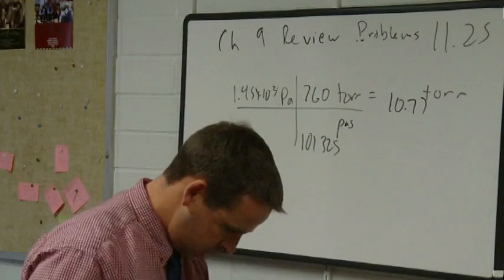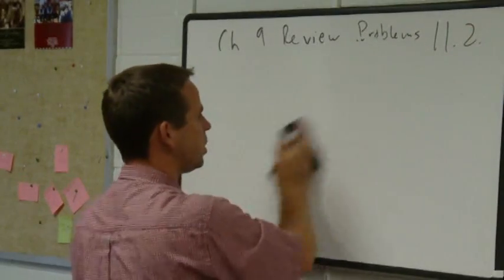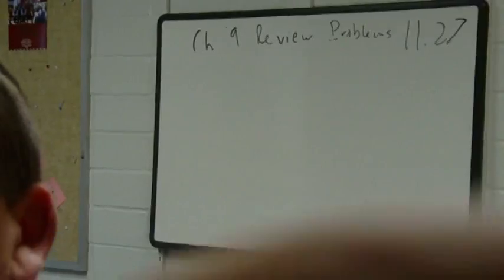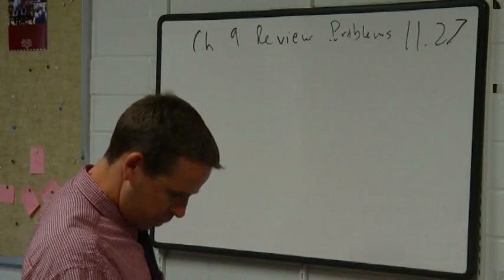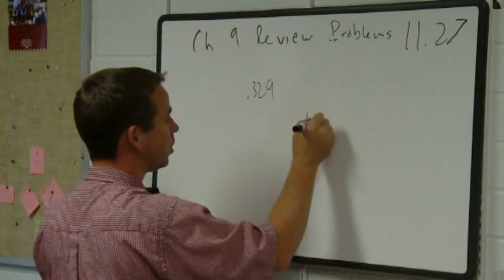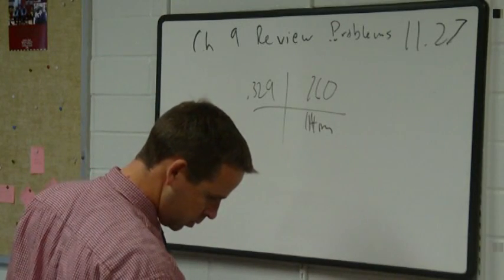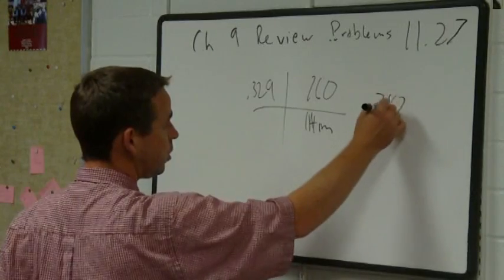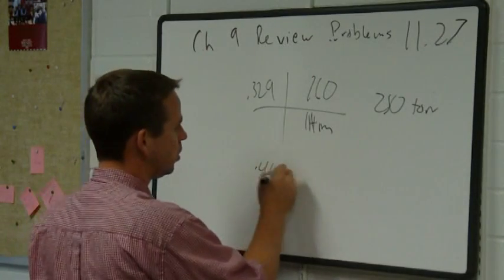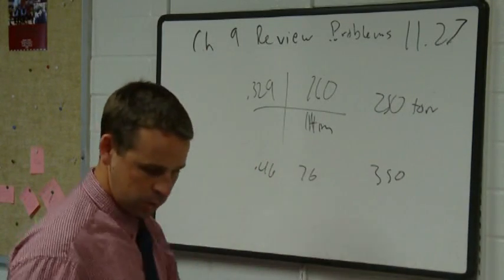Problem 1127: what is the pressure in torr of each gas? For 0.329 atmospheres: 0.329 times 760 equals 250 torr. For 0.46 atmospheres: 0.46 times 760 equals 350 torr. So the answers are 250 torr and 350 torr.